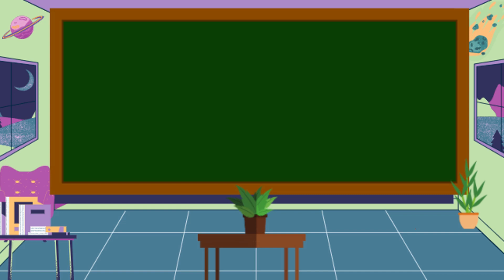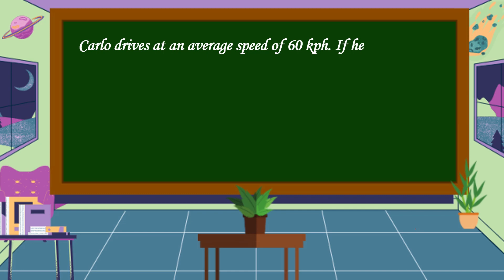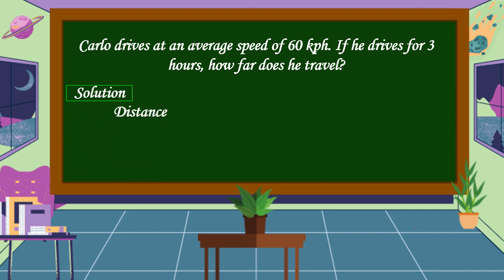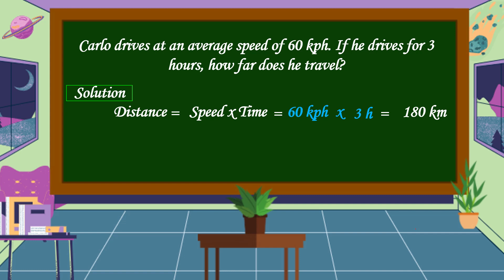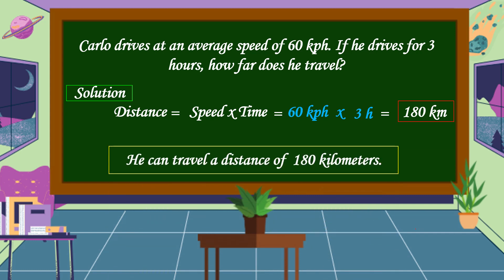Our last problem: Carlo drives at an average speed of 60 kilometers per hour. If he drives for 3 hours, how far does he travel? In this problem, we're going to find the distance. The formula for distance is speed times time. The speed is 60 kilometers per hour and the time is 3 hours. So, 60 kilometers per hour times 3 hours equals 180 kilometers. Therefore, he can travel a distance of 180 kilometers.